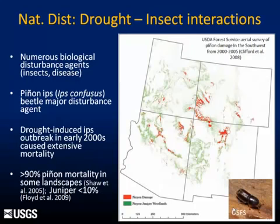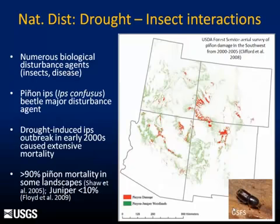It's worth noting that the combined effects of drought and bark beetle did not have an equal effect among the two species. Juniper generally fared quite well, with most stands exhibiting less than 10% mortality of juniper trees. Also worth noting, in the study by Floyd et al., when they studied different PJ systems in different parts of the Four Corners, they did not find a density relationship between the rate of mortality and the rate of pinyon dieback and stand density.